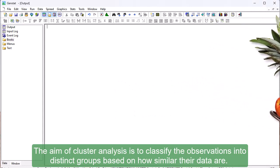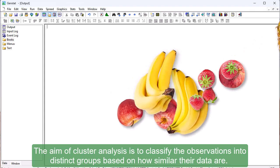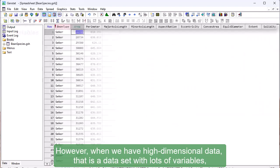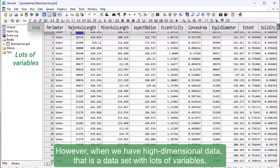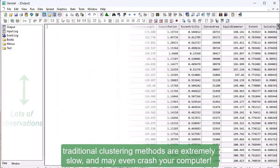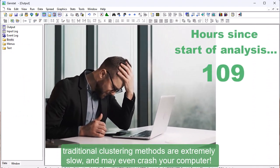The aim of cluster analysis is to classify observations into distinct groups based on how similar their data are. However, when we have high-dimensional data, that is, a dataset with lots of variables or a very large number of observations, traditional clustering methods are extremely slow and may even crash your computer.